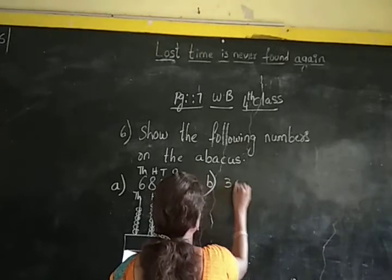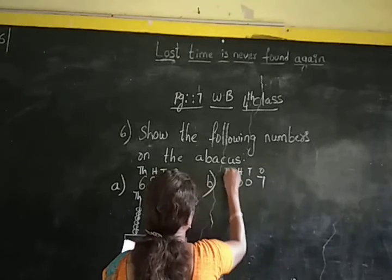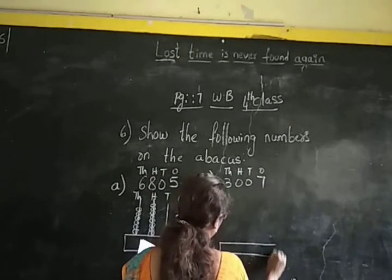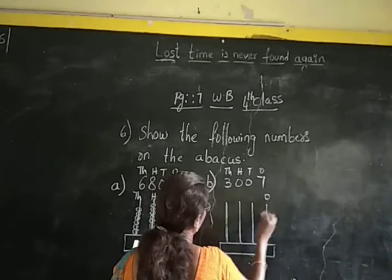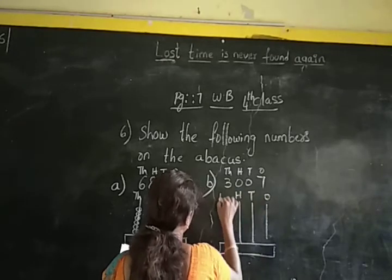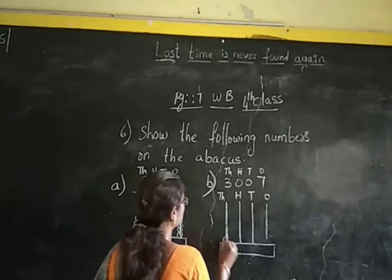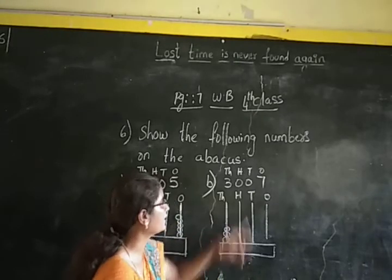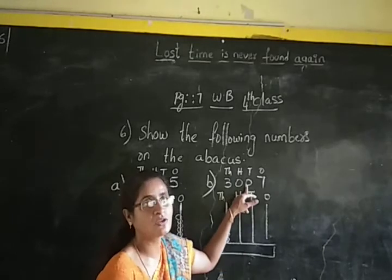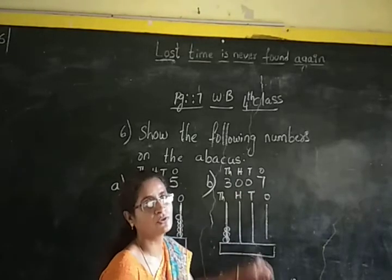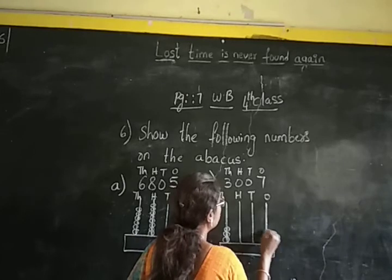In the next sum, we are given 3007. Here we are having 4 digits, so we have to draw 4 spikes: 1's place, 10's place, 100's place, and 1000's place. In 1000's place we are having 3, so we have 3 beads. In 100's place we are having 0, so no bead needed. In 10's place also we are having 0, so no bead needed. In 1's place we are having 7, so we have to show 7 beads.